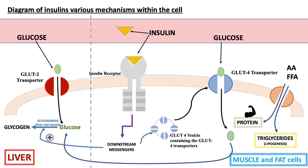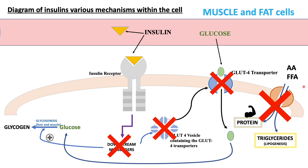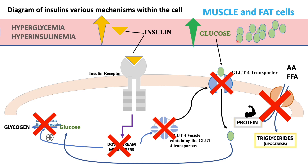So here we have the diagram of insulin's various mechanisms within the cell. When the pro-inflammatory mediators impact or impede our downstream messengers, this will lead to a chain of events — impacting our GLUT4 vesicles with the GLUT4 transporters, which in turn affects their embedding into the cell membrane. This impacts our glucose transport into the cell. Furthermore, this affects our amino acid and fatty acid transport into the cell, affecting protein synthesis as well as lipogenesis. The downstream messengers also play a role with glycogenesis, so this will also be impacted. If the GLUT4 transporter is not embedding itself into the cell membrane, glucose is not going to be able to enter the cell, leading to hyperglycemia.